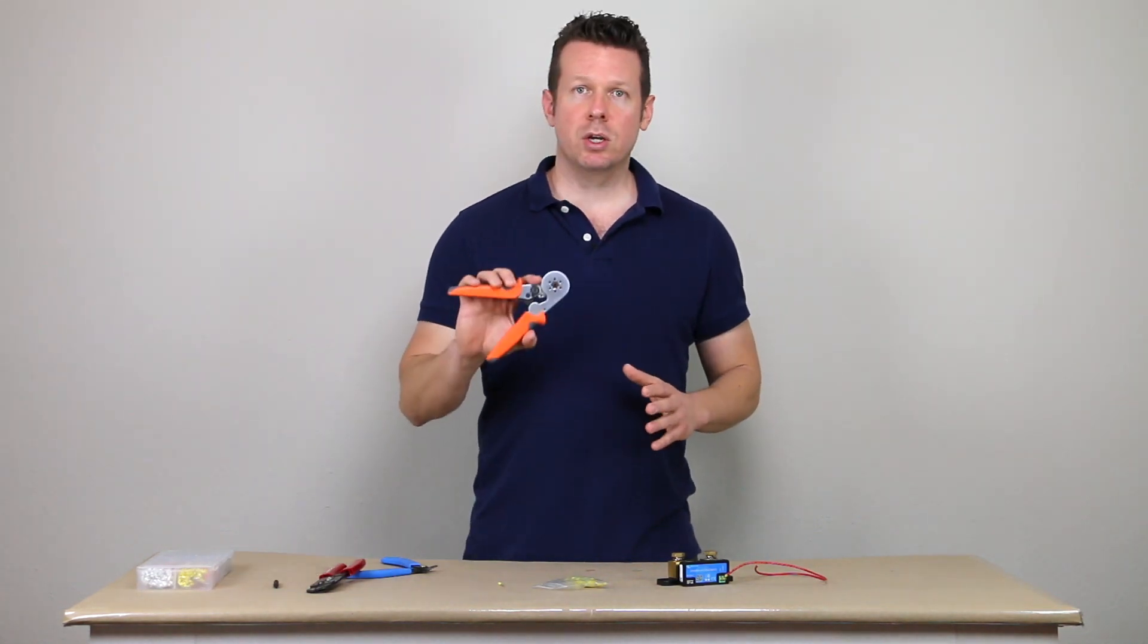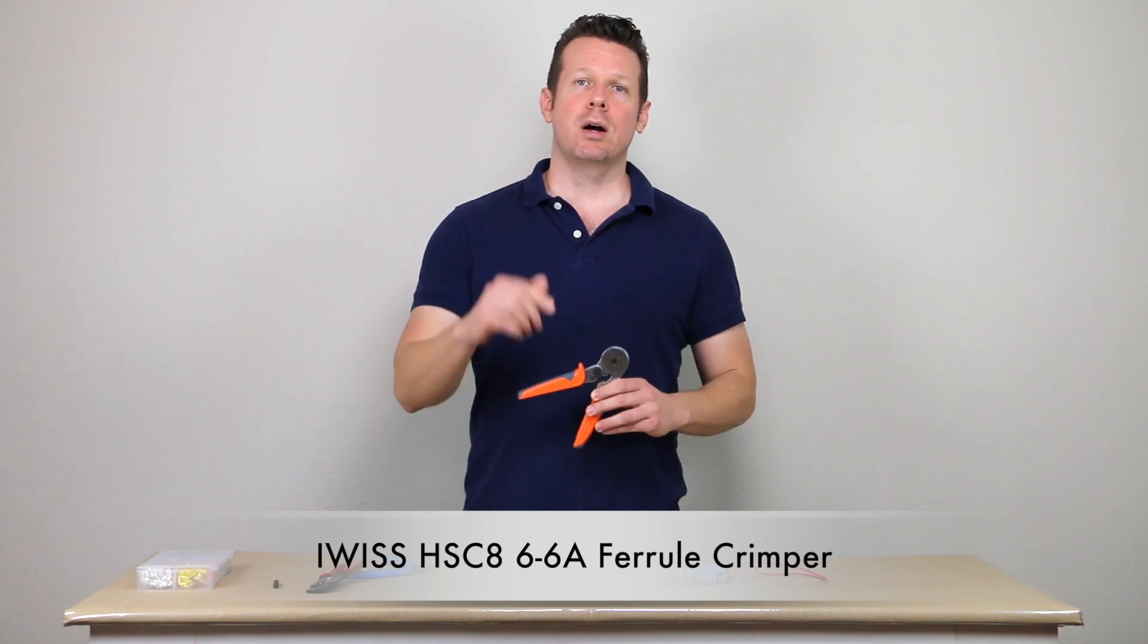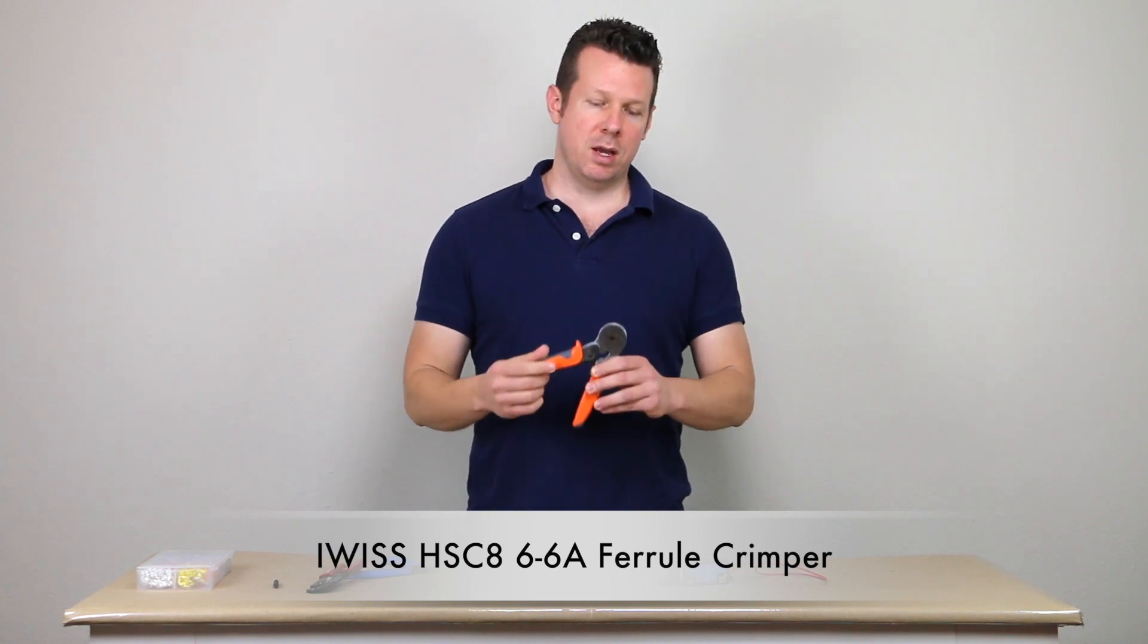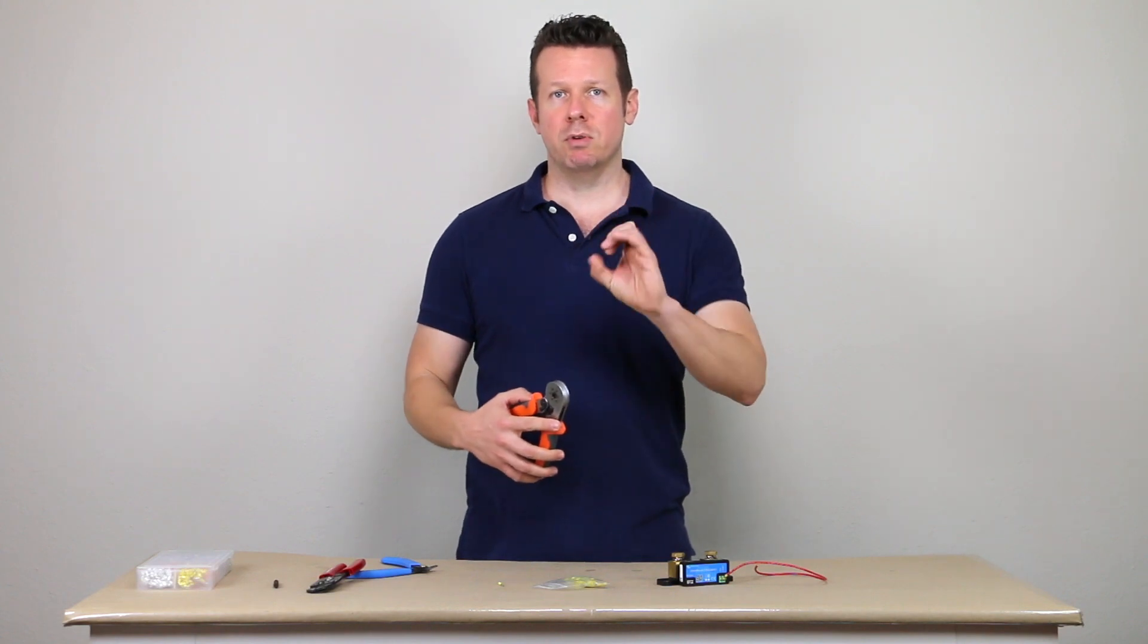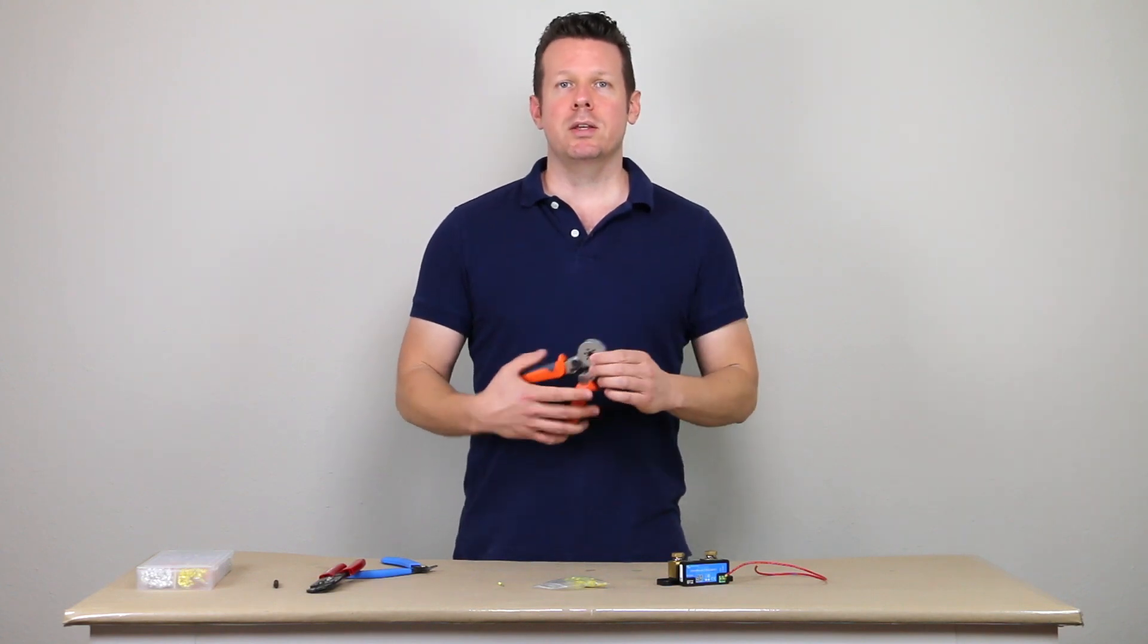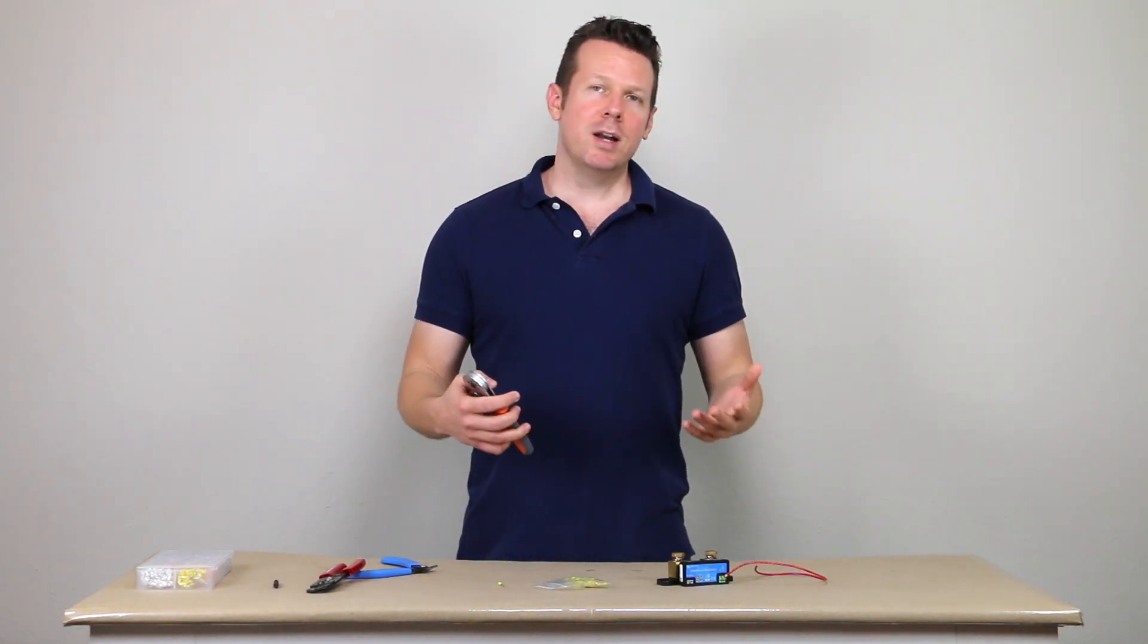Now, as far as the crimper, I use an iWIS hexagonal crimper, and I'll go ahead and put the part number for that as well. And most of the crimpers are going to give you a four-sided crimp. This is going to give you a six-sided crimp.